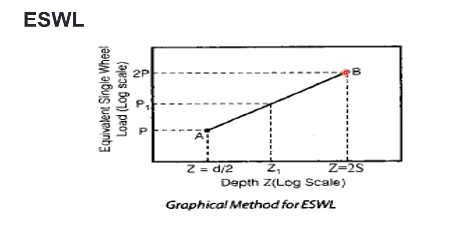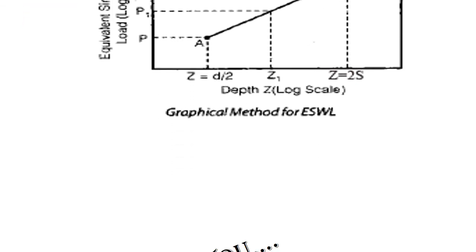If you want to find the ESWL value, that is P1 at a depth of Z1, first on the x-axis locate the value Z1 at which you need to find the equivalent wheel load factor. After locating the point Z1, draw a straight line where it touches and project towards the ESWL, meaning project towards the y-axis, so that you can find the respective P1 value. P1 is the equivalent single wheel load value at a depth of Z1. This is the simple graphical presentation which is used to find the ESWL value. Thank you.